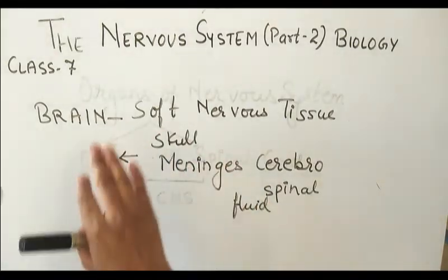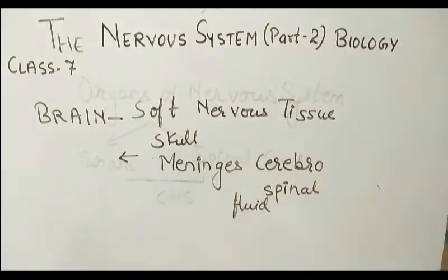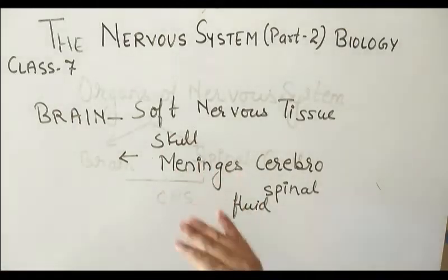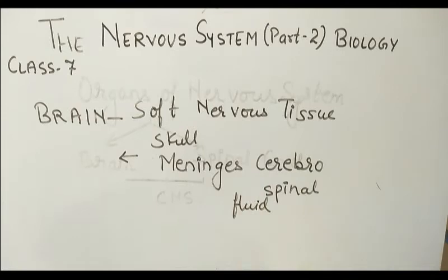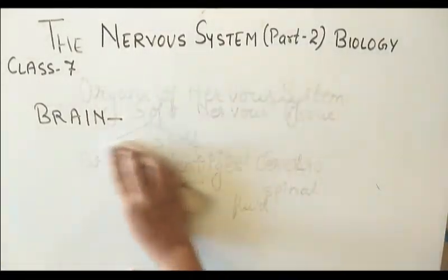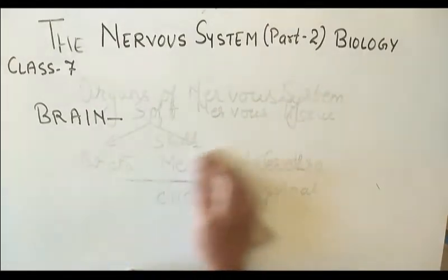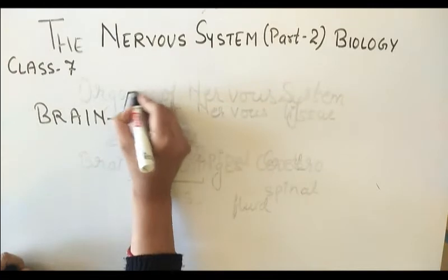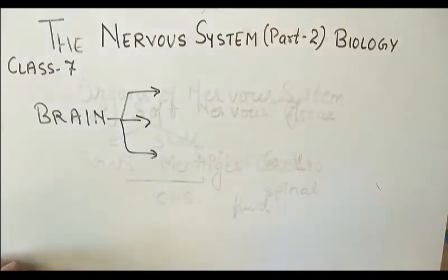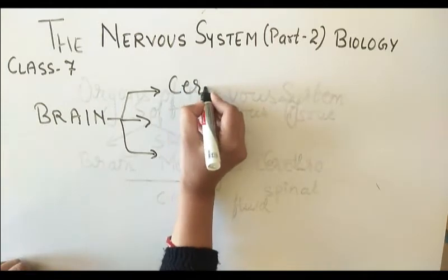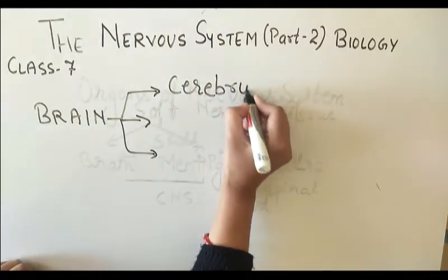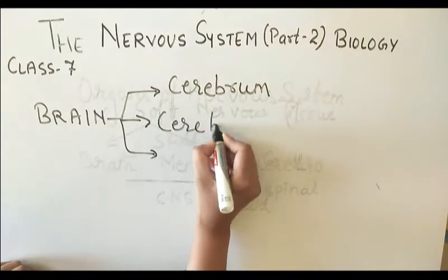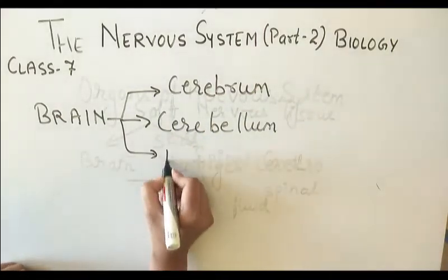Now let us talk about the human brain — how the human brain is divided and what the parts of the human brain are. The human brain is divided into three main parts: the cerebrum, the cerebellum, and the medulla.